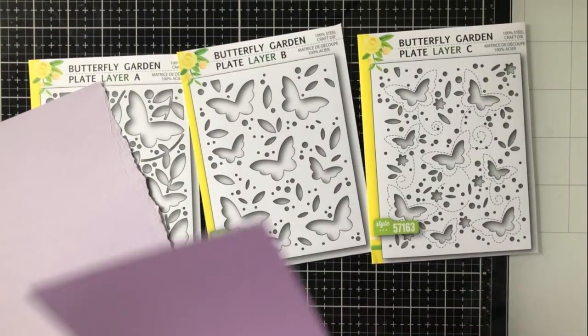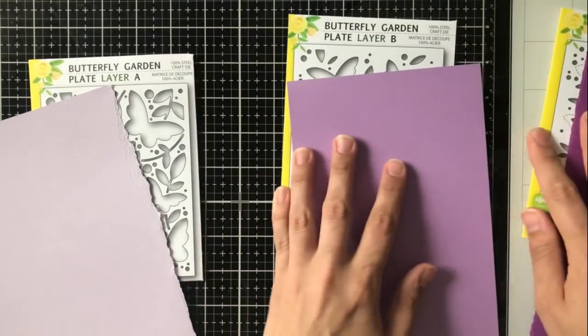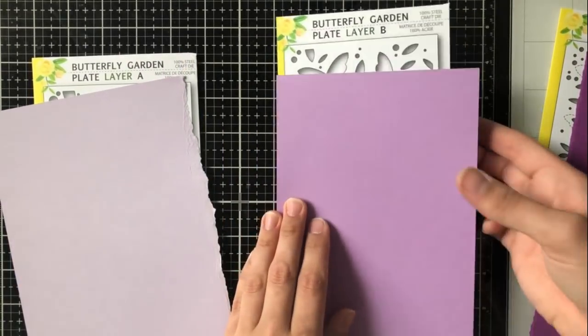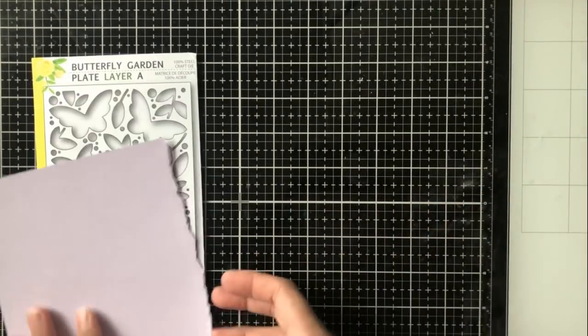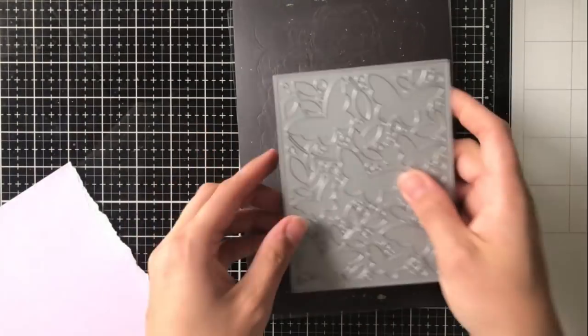So today I'm going to be using butterfly garden layer A, B and C, and these are all from Birch Press Designs. You can see I sort of layered them here with the colored cardstock that I'm going to be using.